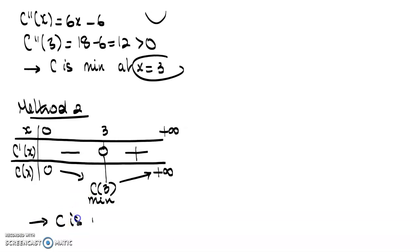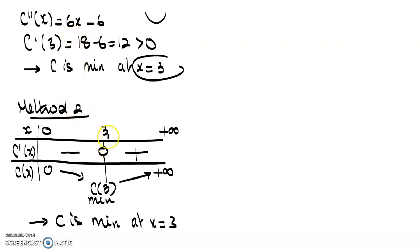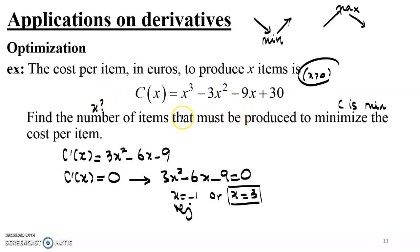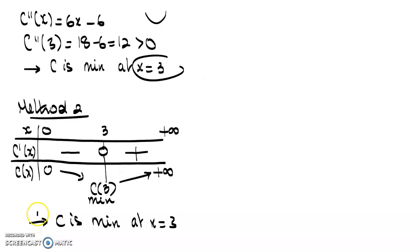So we deduce the same result: C is minimum at X equals 3. Whenever you need to find the nature of an extremum, you can use either the second derivative test or the first derivative test, but the first derivative test requires setting up the full table of variations. The second derivative test works specifically at those given values. This concludes the first exercise on optimization. In the following lesson, we'll solve another exercise involving trigonometry and geometry.